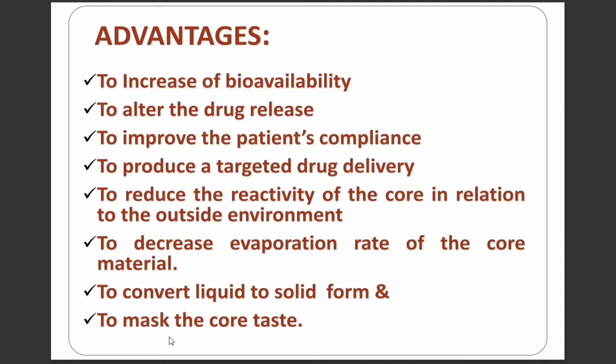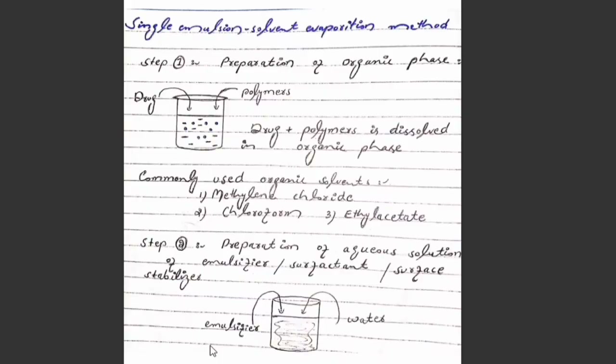Further advantages include decreasing the evaporation rate of the core material, converting the liquid to solid form, and masking the bad taste of the core material. For microencapsulation we have many methods; one method is the solvent evaporation method, the first being the single emulsion solvent evaporation method.